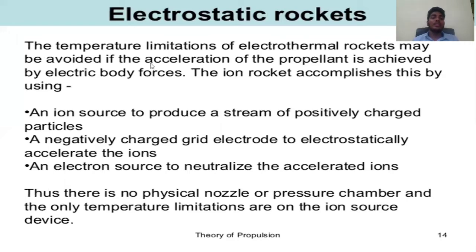Electrostatic rocket: the temperature limitations of electrothermal devices may be avoided if the acceleration of propellant is achieved by electrical body forces. The ion rocket accomplishes this by using an ion source to produce a stream of positively charged particles, a negatively charged grid electrode to electrostatically accelerate the ions, and an electron source to neutralize the accelerated ions. Thus there is no physical nozzle or pressure chamber, and the only temperature limitations are on the ion source device.